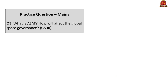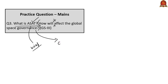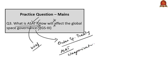The next mains question asks: 'What is ASAT? How will it affect global space governance?' The first part is a direct question—write briefly about anti-satellite missiles in general. For the second part, speak about global space governance including the Outer Space Treaty, mention some of its provisions to highlight the current governance, then discuss how anti-satellite missiles will increase weaponization in space. At the end, give some suggestions about how to improve space governance and conclude your answer. With this, we come to the end of today's session.